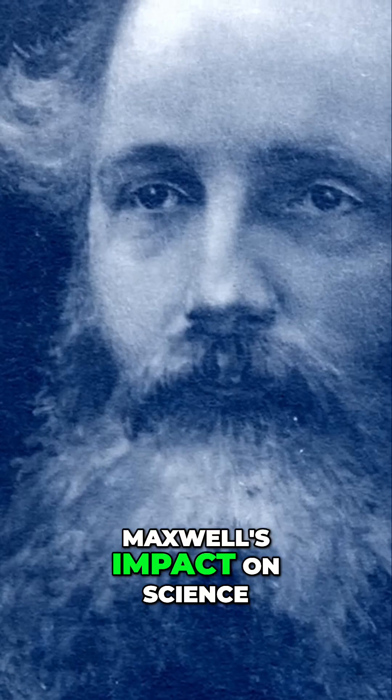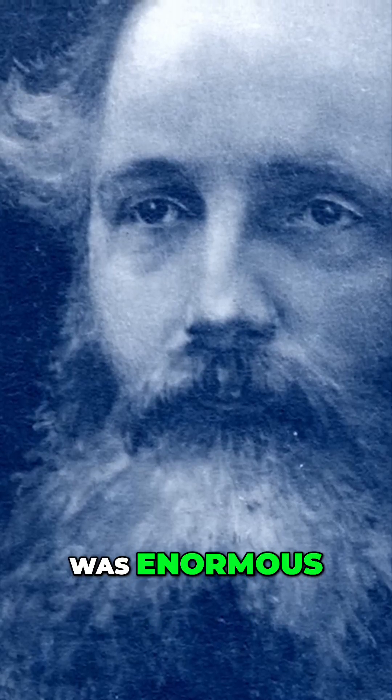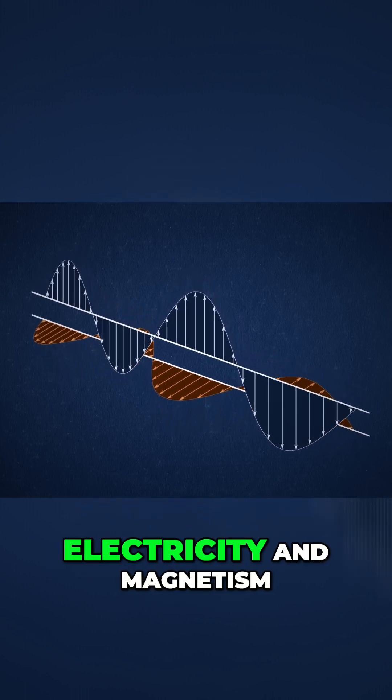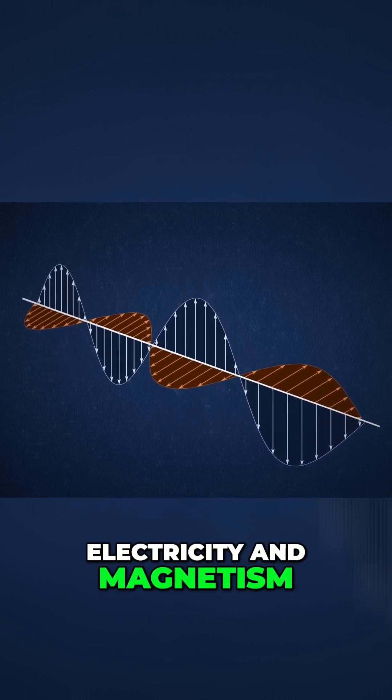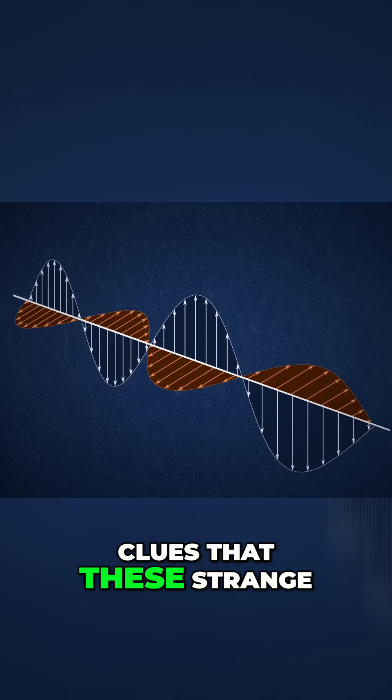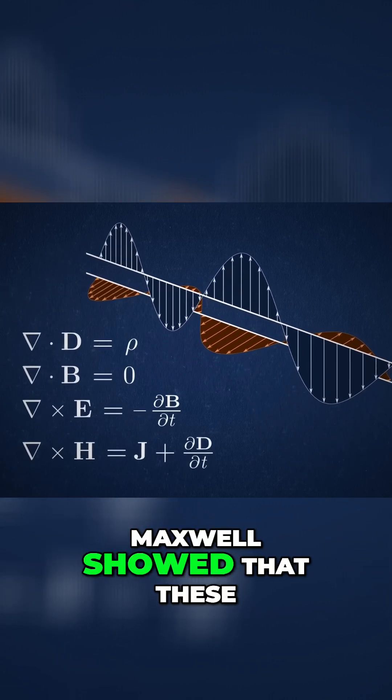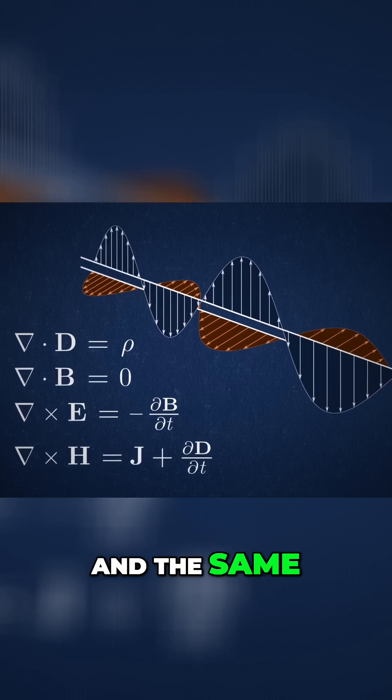Maxwell's impact on science was enormous. By the mid-1800s, Maxwell had mathematically united electricity and magnetism. There had been experimental clues that these strange phenomena were related, but in a handful of equations, Maxwell showed that these two things were one and the same.